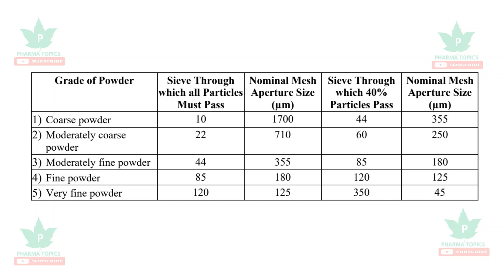Fine powder passes through sieve 85 and very fine powder passes through sieve 120. Additionally, the sieve through which 40% of particles pass: for coarse powder it is 44, moderately coarse is 60, moderately fine is 85, fine powder is 120, and very fine powder is 350.